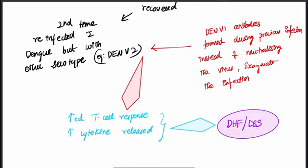This produces Dengue hemorrhagic fever or Dengue shock syndrome, which always occur as complications when the person is affected with Dengue for the second time with another serotype.